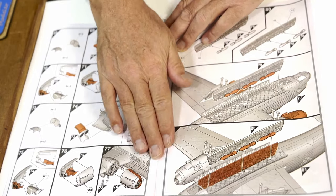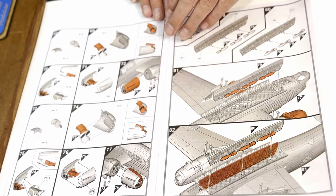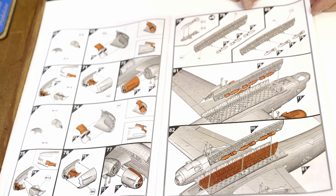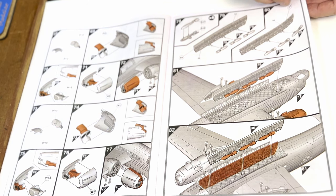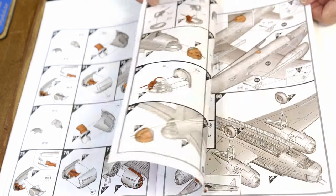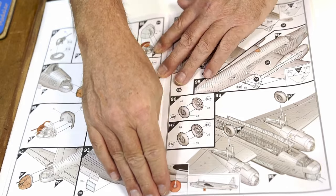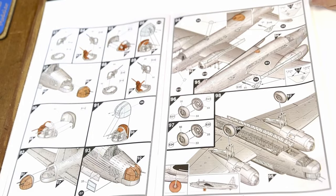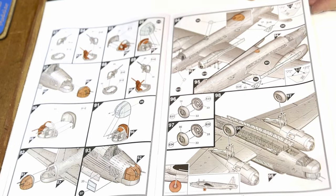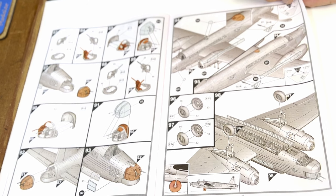Regarding the bomb bay, Airfix doesn't actually include a tarpaulin to put in between the fuselage and the actual bomb bay, so you'd have to scratch build that and make it yourself, which I did. It's pretty easy doing it with some Tamiya tape. If you've watched the full build video, you'll see what I do on that.